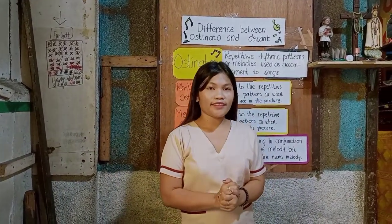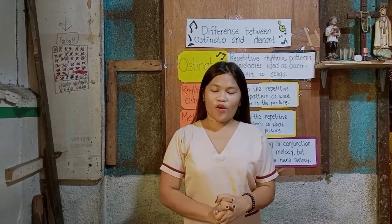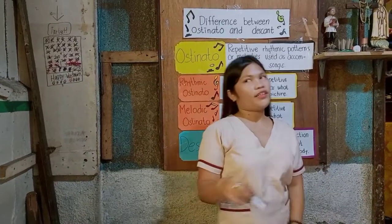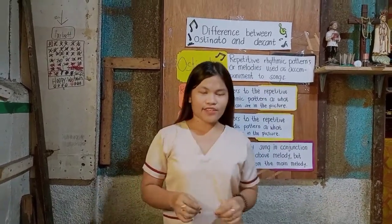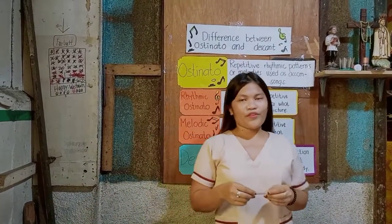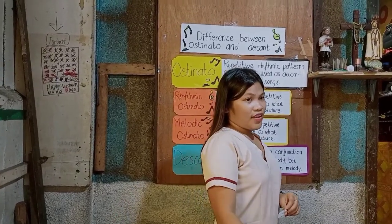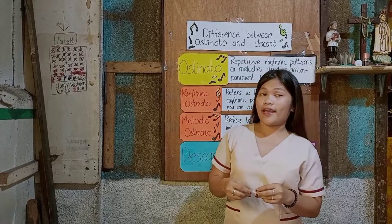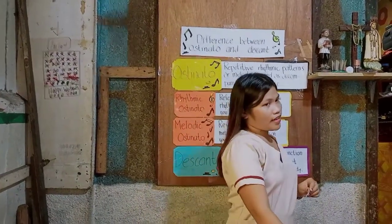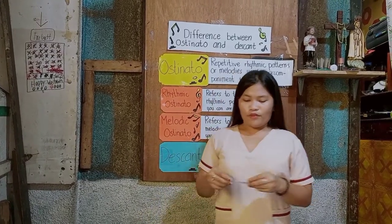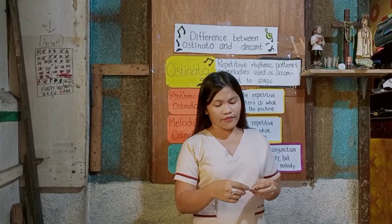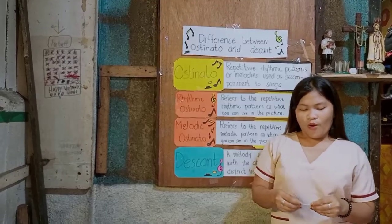Okay, is everyone done? Can the representative of group one come in front and share your word? Very good — Descant. Group two, please come in front and say your arranged word. Very good — Ostinato. Group three, very good — Melodic Ostinato. Group four, very good — Rhythmic Ostinato. And the last one, group five, please say your word. Very good — Texture. Let's all give ourselves a round of applause for understanding today's topic!